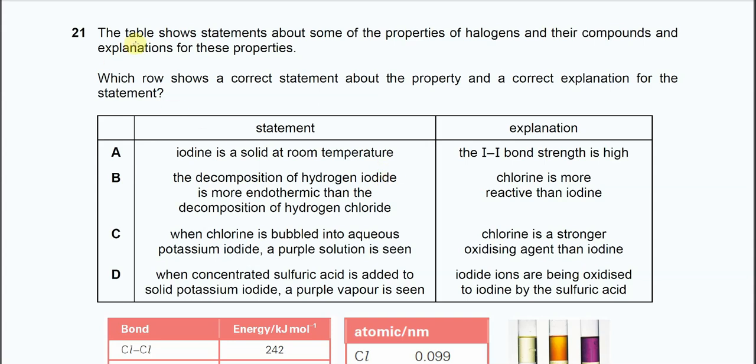Question 21. The table shows statements about some properties of halogens and their compounds and explanations. Which row shows the correct statement about the property and correct explanation? So this question, there are quite a lot of information. And let's start from A.